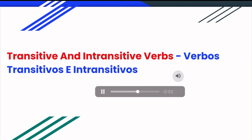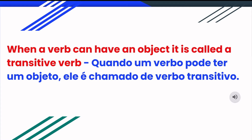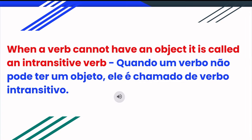Transitive and intransitive verbs. When a verb can have an object it is called a transitive verb. When a verb cannot have an object it is called an intransitive verb.